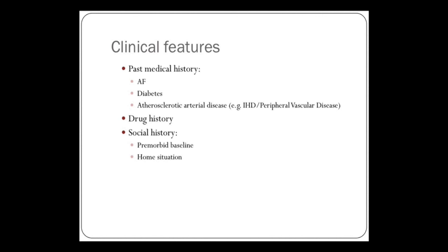In the past medical history, AF is very important because that's a risk factor for embolism. Diabetes greatly increases your risk of stroke, independent of any other risk factors — whether you smoke or have high blood pressure — and that's poorly controlled diabetes. So you'd need to ask the patient how well their diabetes is controlled. And any pre-existing atherosclerotic disease, whether in the heart or peripheral circulation in the legs.